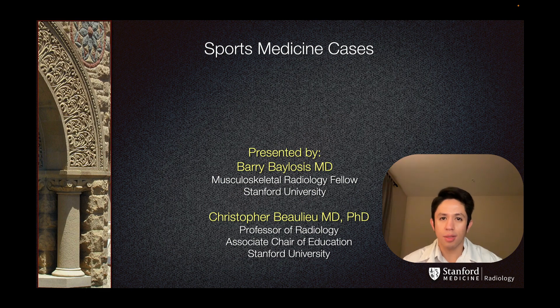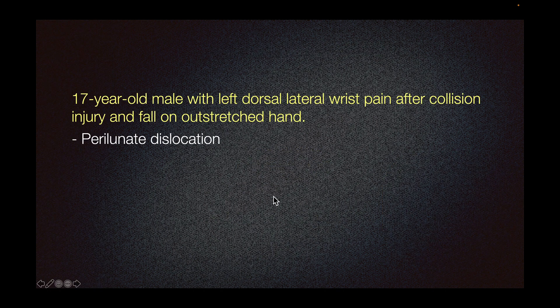This is Barry Bellosis, one of the musculoskeletal radiology fellows at Stanford University. 17-year-old male with left dorsolateral wrist pain after a collision injury and fall on outstretched hand, concerned for perilunate dislocation.